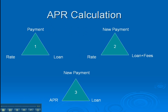How do we calculate Annual Percentage Rate? We take the components of the loan in this triangle format here — a pretty easy way to explain this. We have your loan amount, your rate, and your payment. If we know any two of these numbers, we can calculate the third. So what we're going to do is change the loan amount to a loan amount plus the fees to do the loan, keep the rate the same, and we're going to get this new payment.